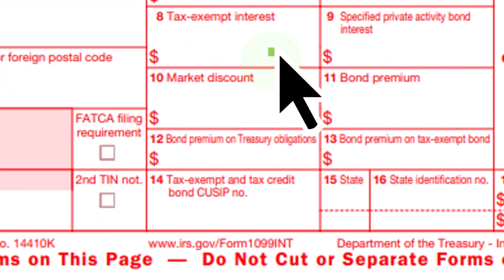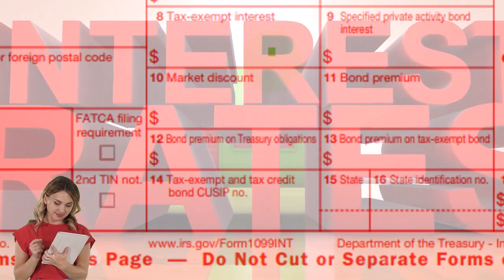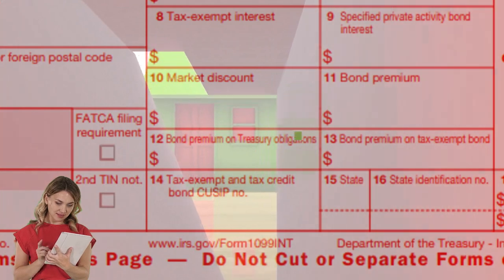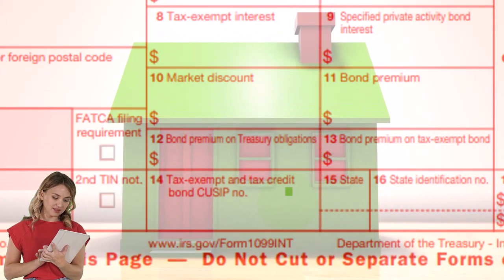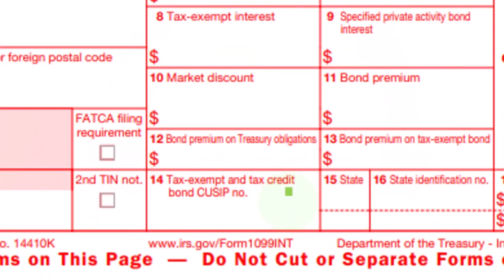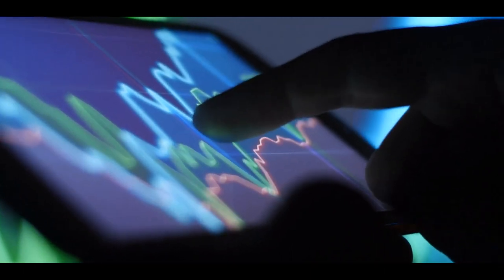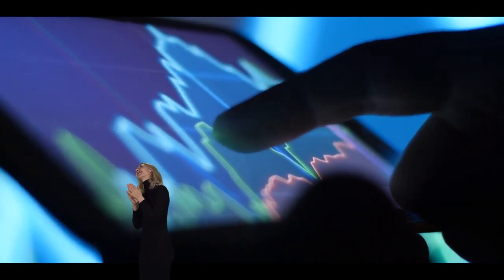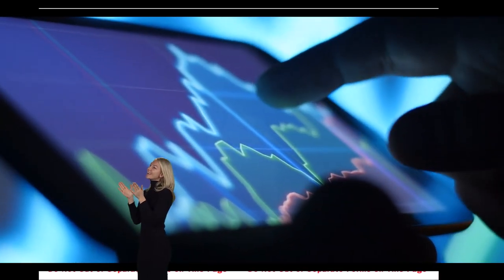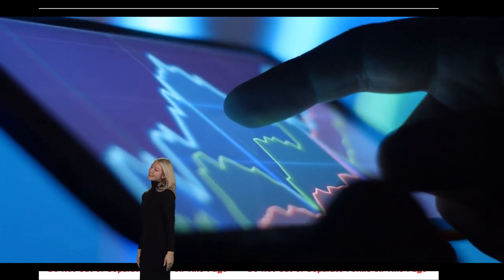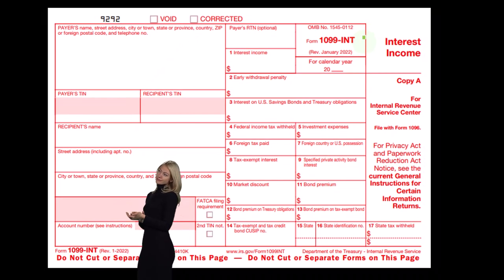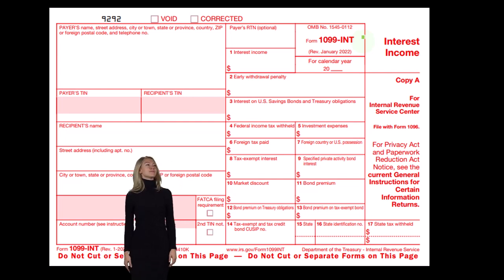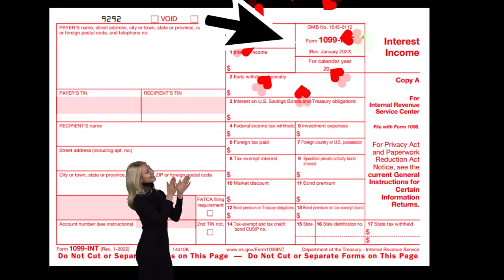Box seven covers tax-exempt interest, and then there are boxes for specified private activity bonds, market discount, bond premium, bond premium on treasury obligations, bond premium on tax-exempt bonds, and tax-exempt and tax credit bond CUSIP numbers. Some of these boxes are less common than others. If you see something unfamiliar, check the instructions for more information. Remember, the bank or financial institution issues the 1099-INT because the government regulates them and requires them to also send it to the IRS.